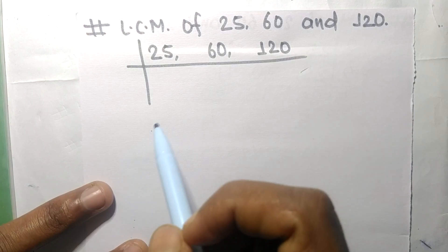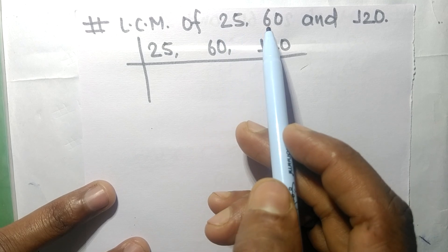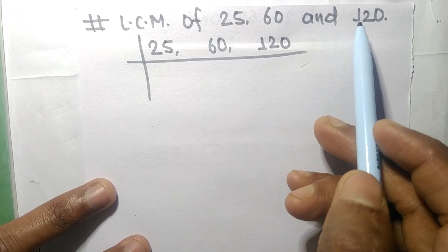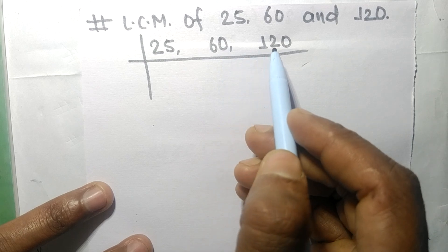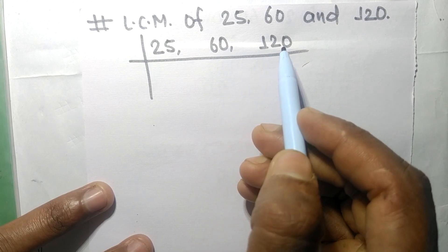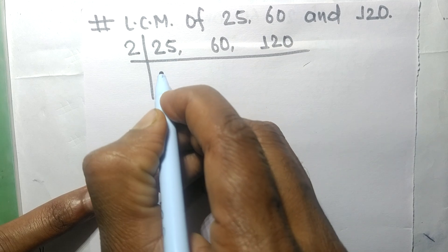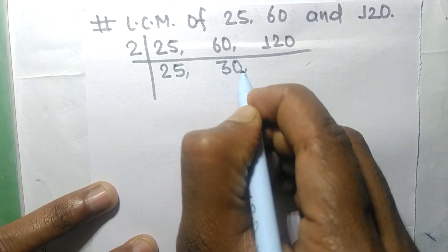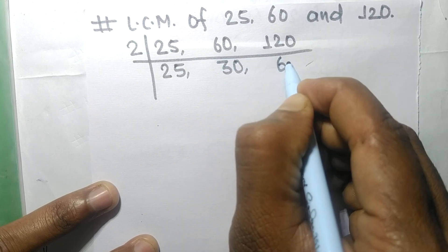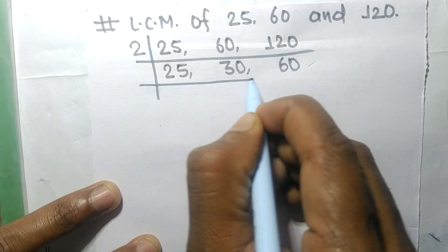So today in this video we shall find LCM of 25, 60 and 120. 60 and 120 are exactly divisible by 2, 25 not divisible so it is same. 2 times 30 means 60, 2 times 60 means 120.